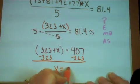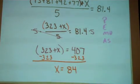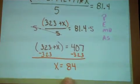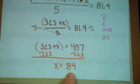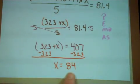And it turns out I'll have to get an 84 on my test to get an 81.4 average. Now that means any score that's bigger than 84 would guarantee me at least that B minus, if not a better grade.